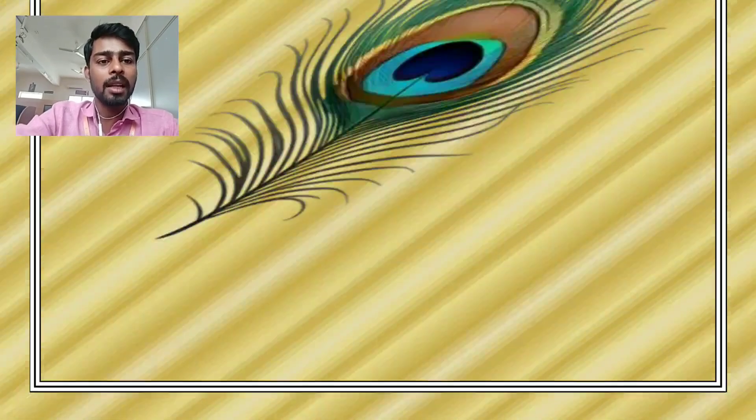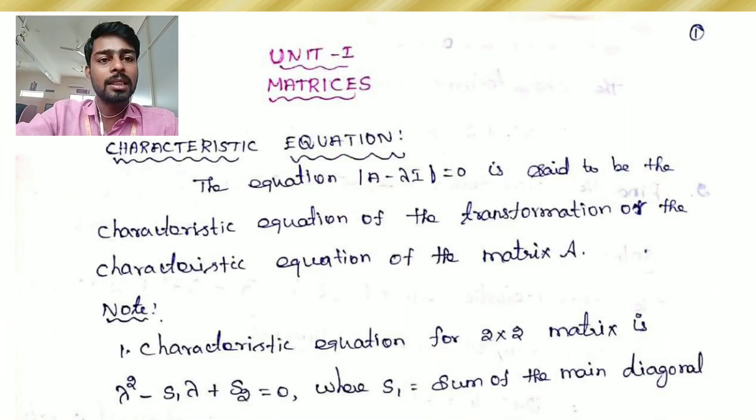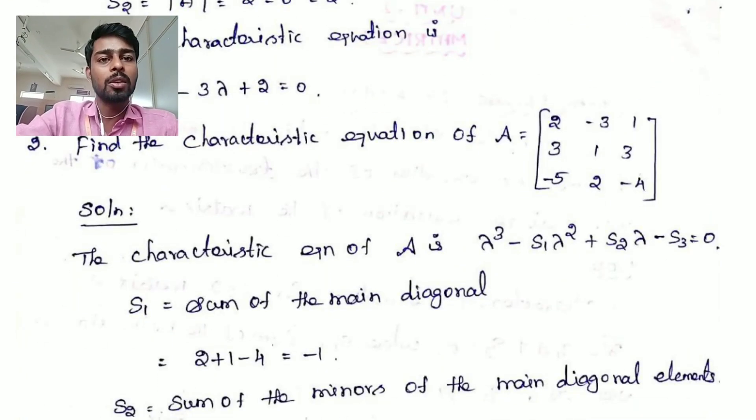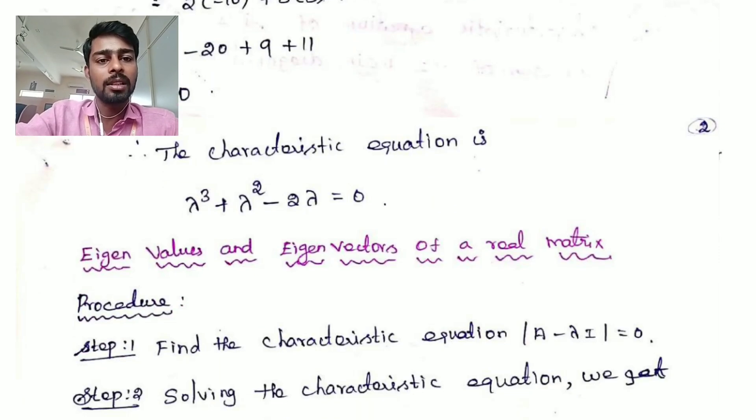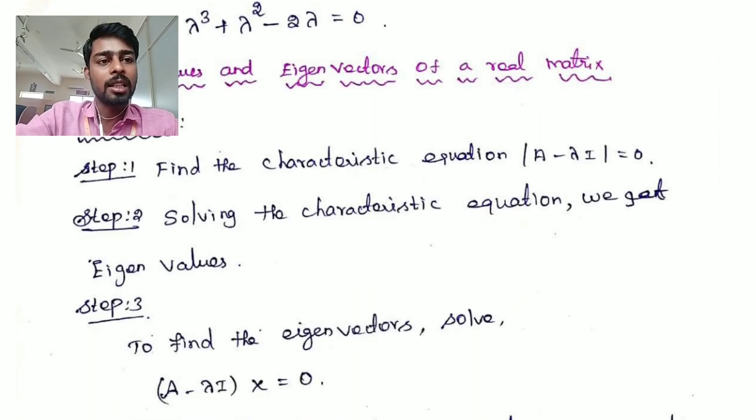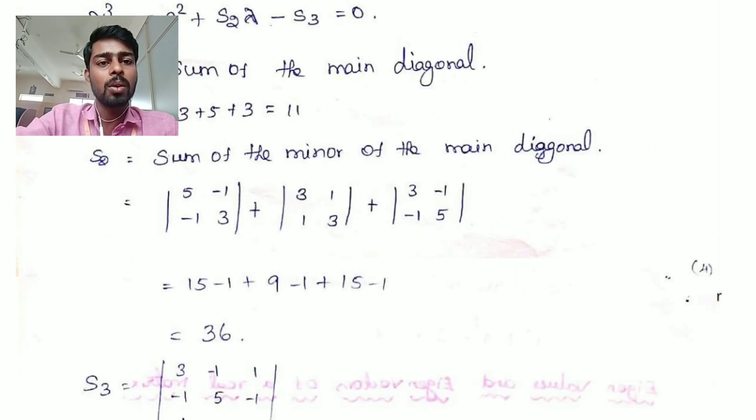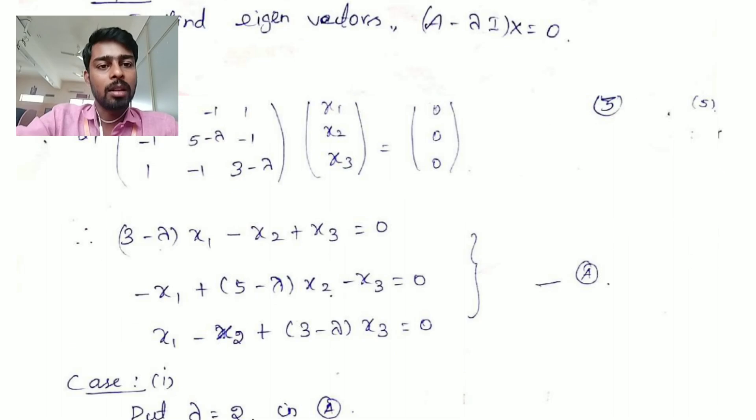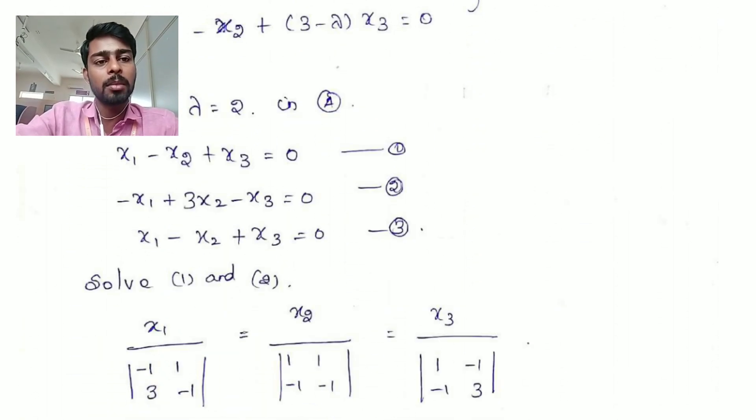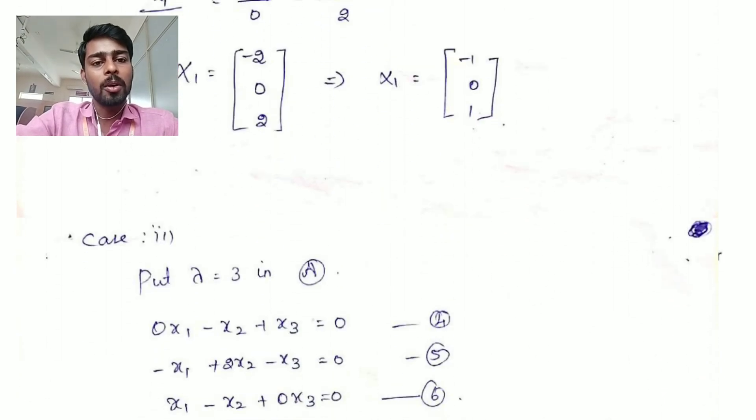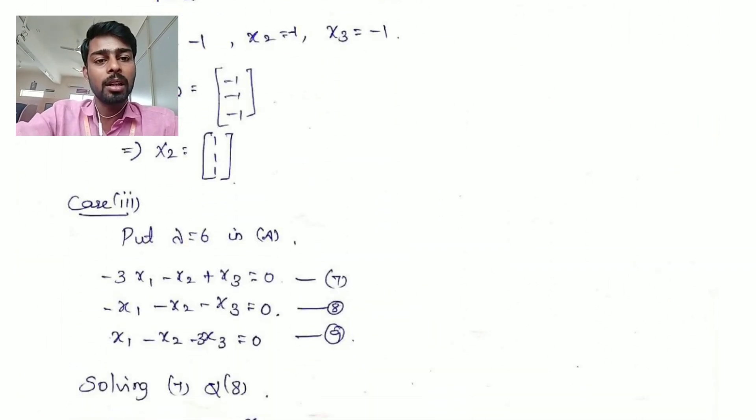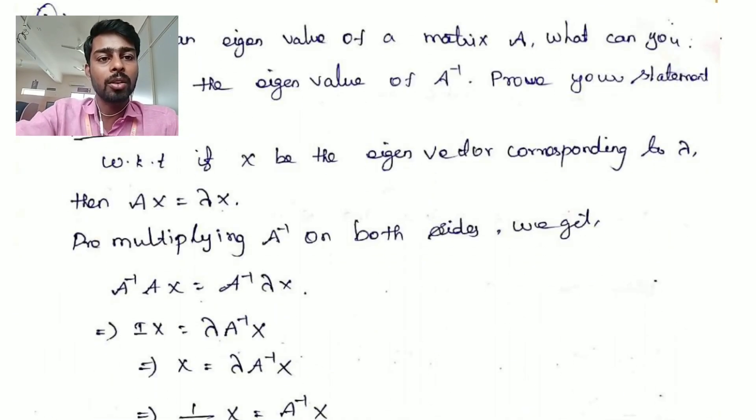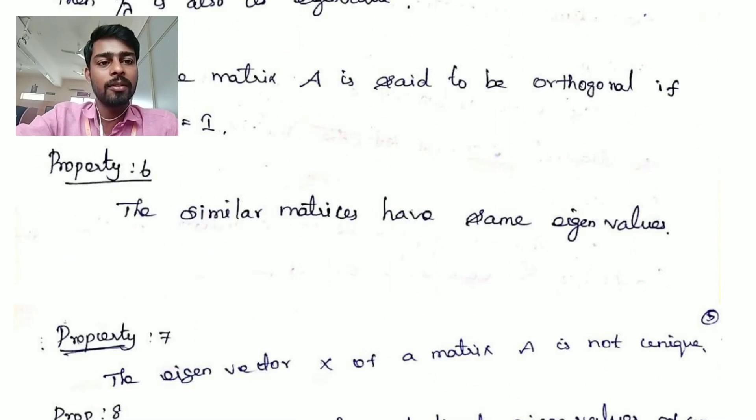In the previous classes, we have discussed the matrices and characteristic equations and how to find the roots of the characteristic equation and finding the eigenvalues and eigenvectors of the real matrix. And also, we have found some examples of it and solved some examples of it.